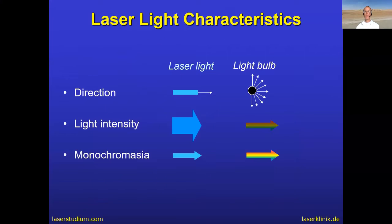With this principle, you have worked out the main laser light characteristics. The first is that all rays go in the same direction, not like a light bulb which emits in every direction. It has a high light intensity and it is monochromatic — only one wavelength. The wavelength depends on the kind of laser medium, and we will come to this later.